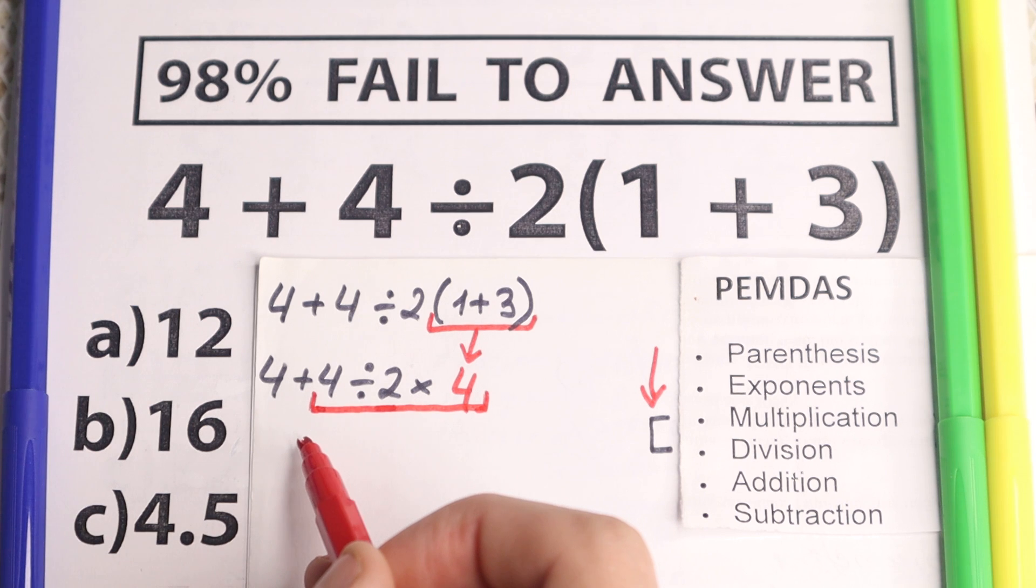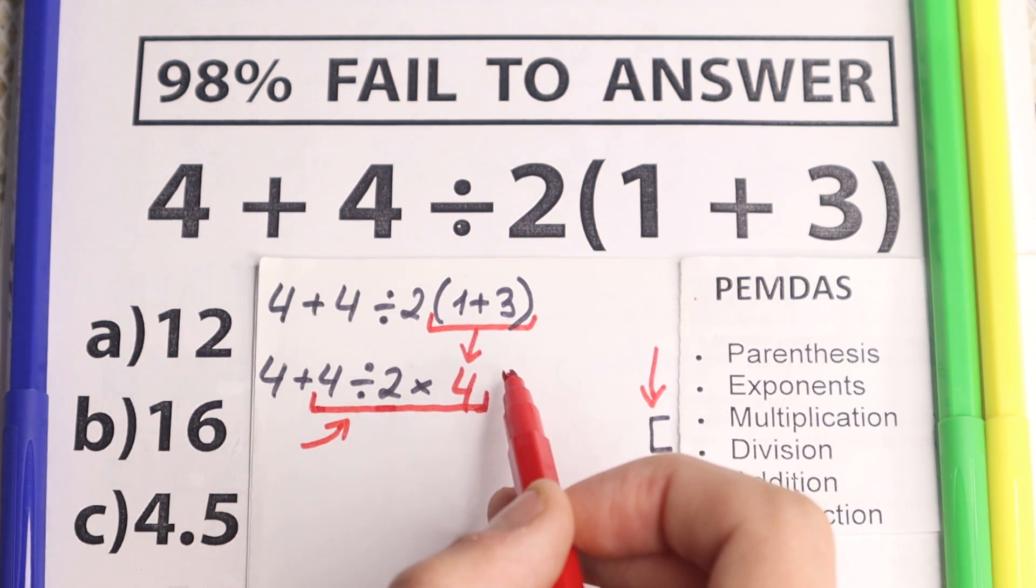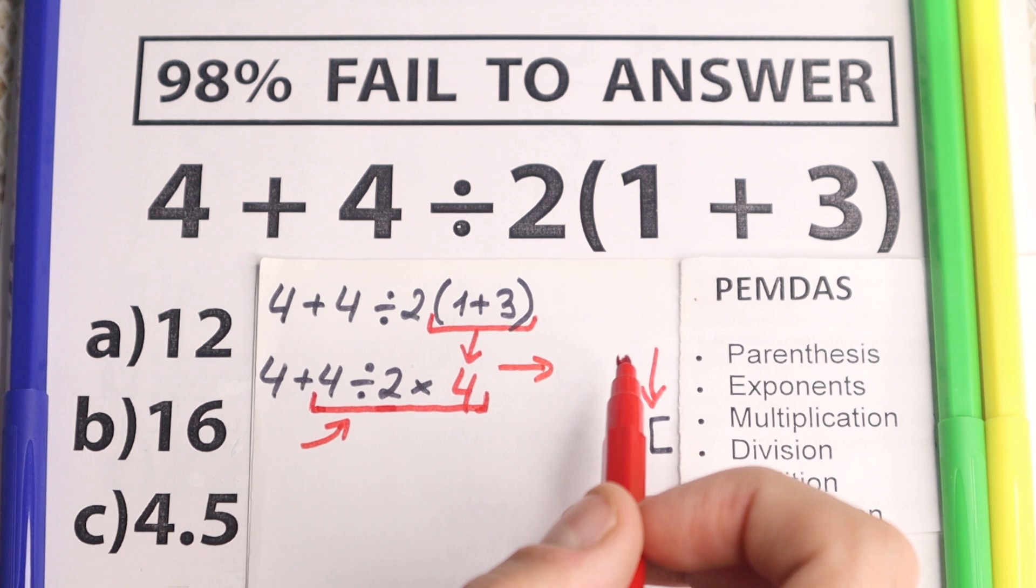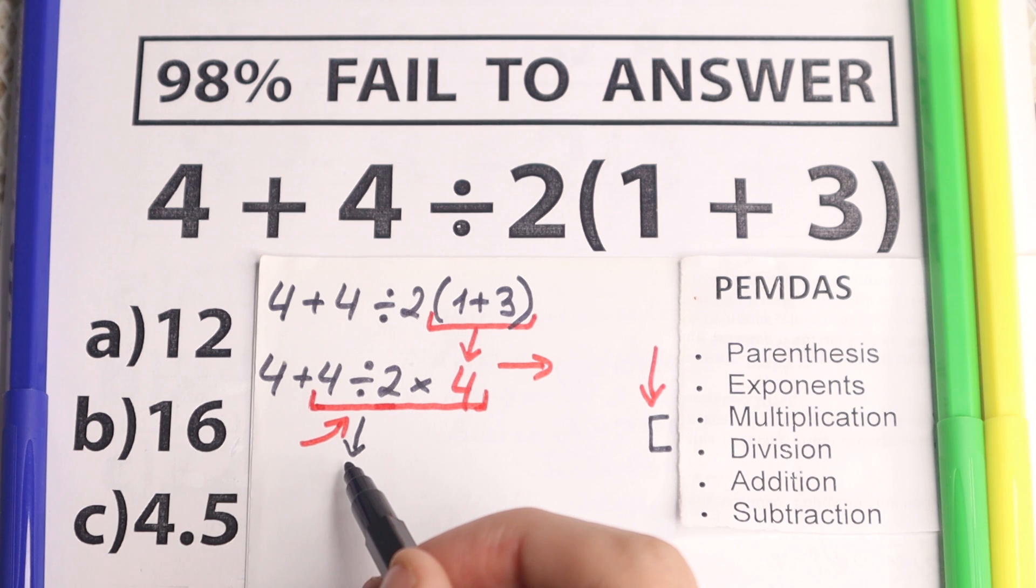Let's look at it. From left to right, the first sign is this division. So we need to divide at first. So from left to right, I write this line. So let's divide at first. 4 divided by 2 equal to 2.